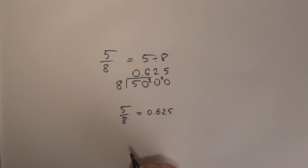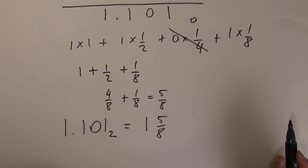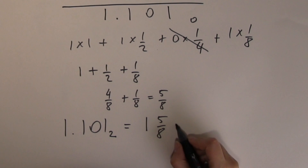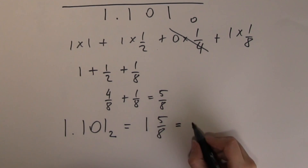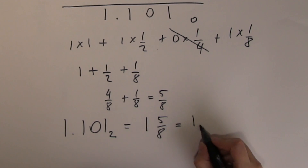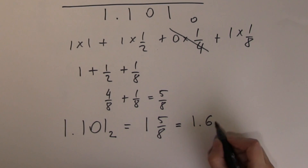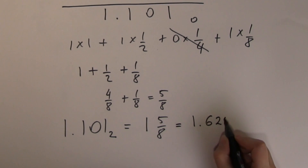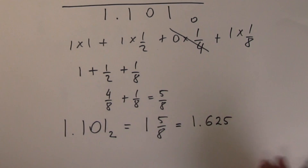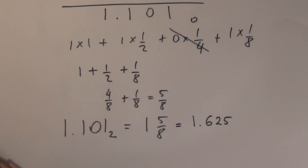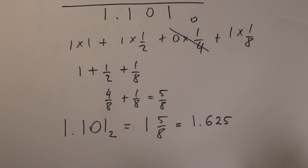So one and five eighths is also the same as 1.625. It depends on whether you prefer the result as a fraction or as a decimal fraction.